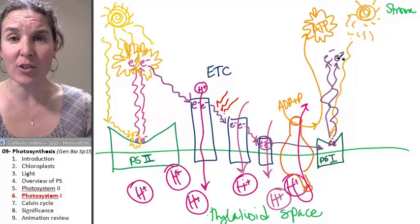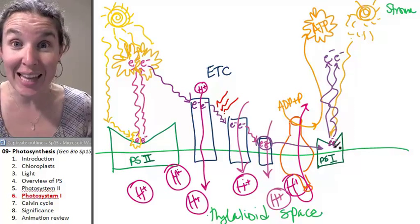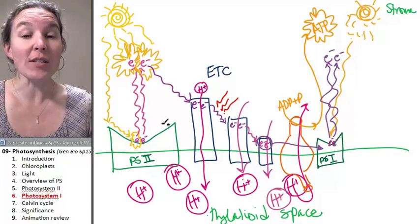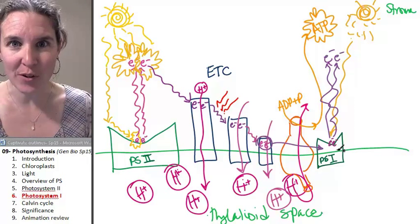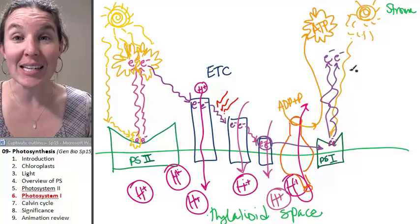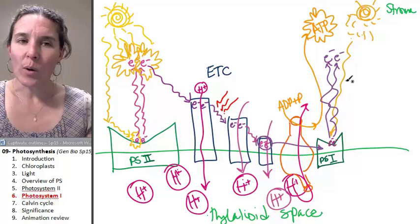Photosystem I threw its own electrons up there. It's going to need to have its electrons replaced. This is a win-win situation. Photosystem II has a final electron acceptor. Photosystem I has a way to replace its electrons.